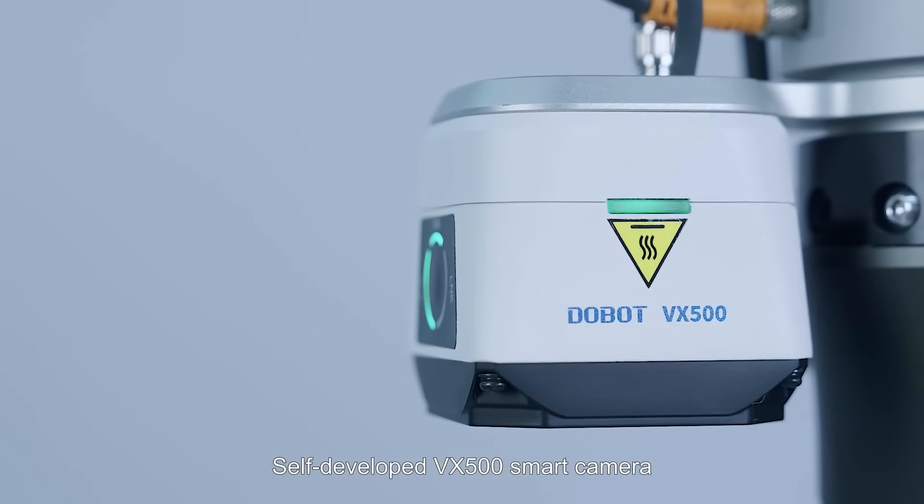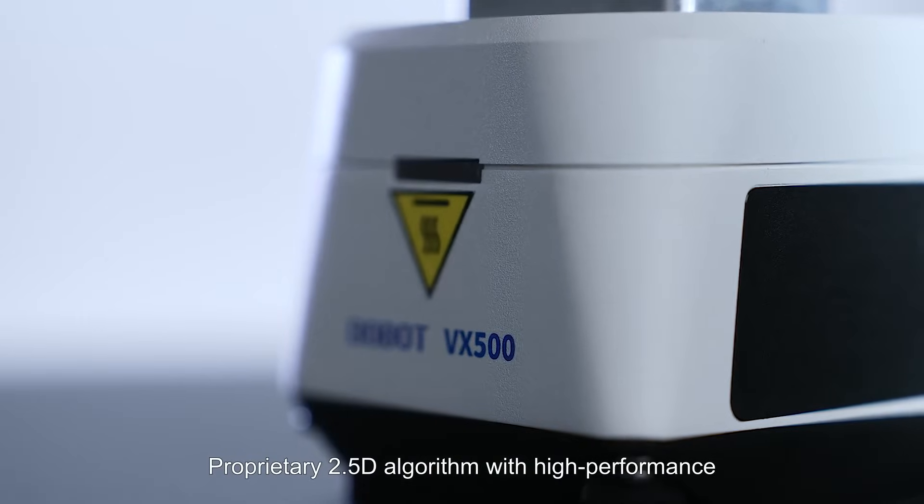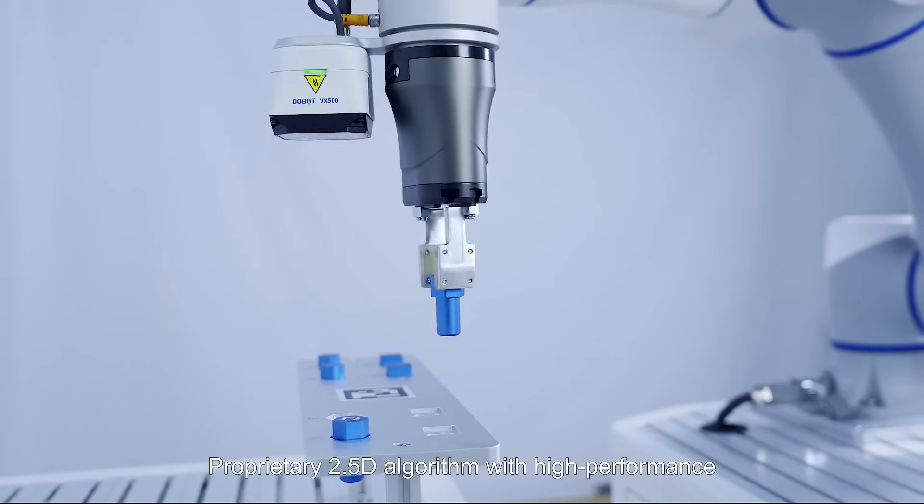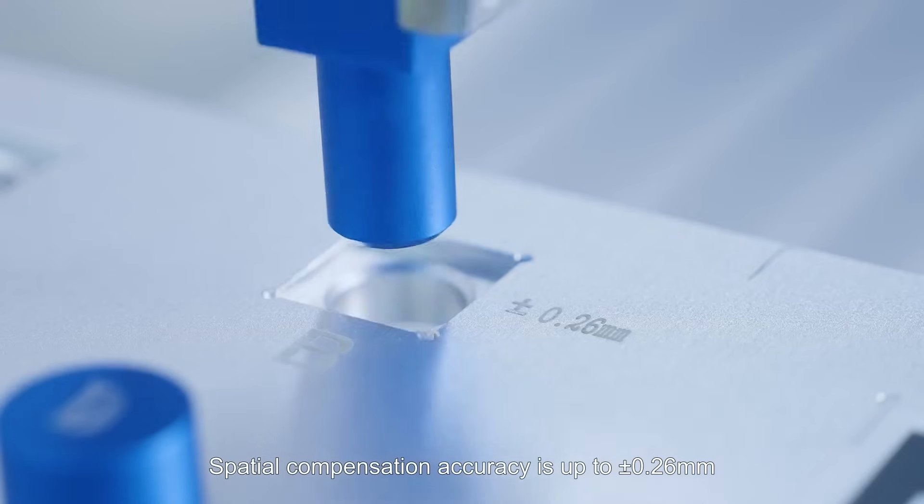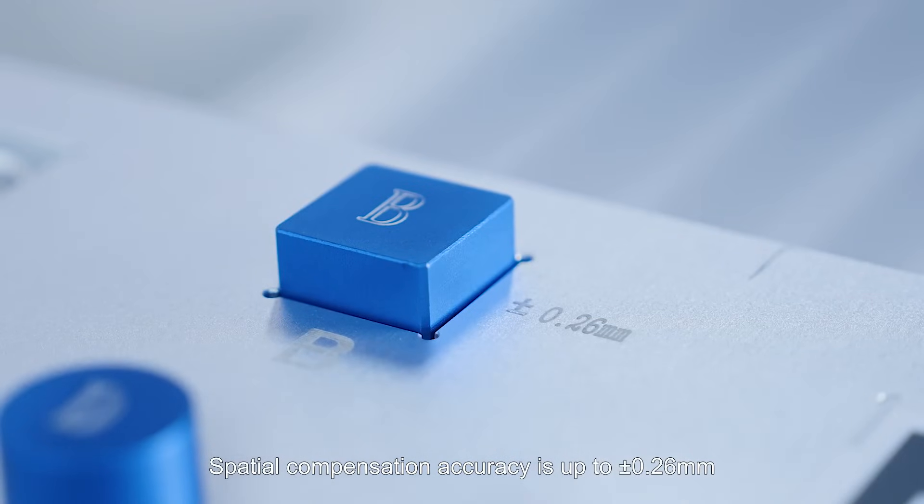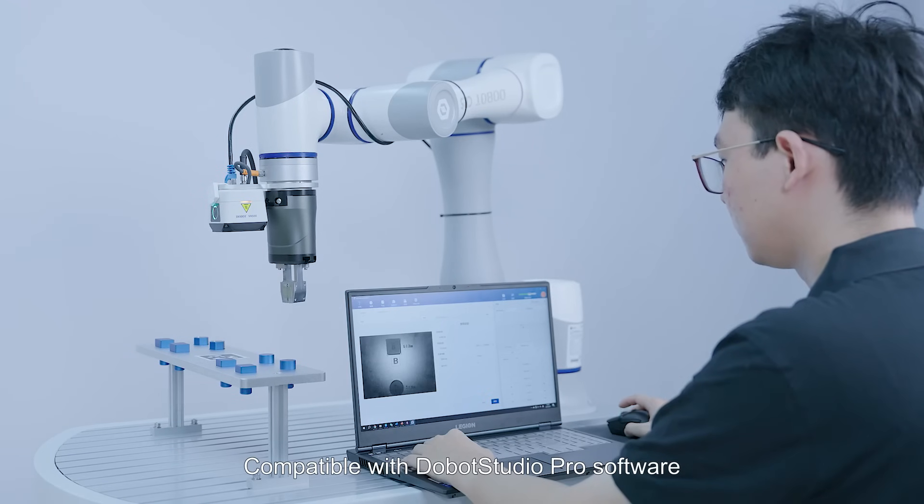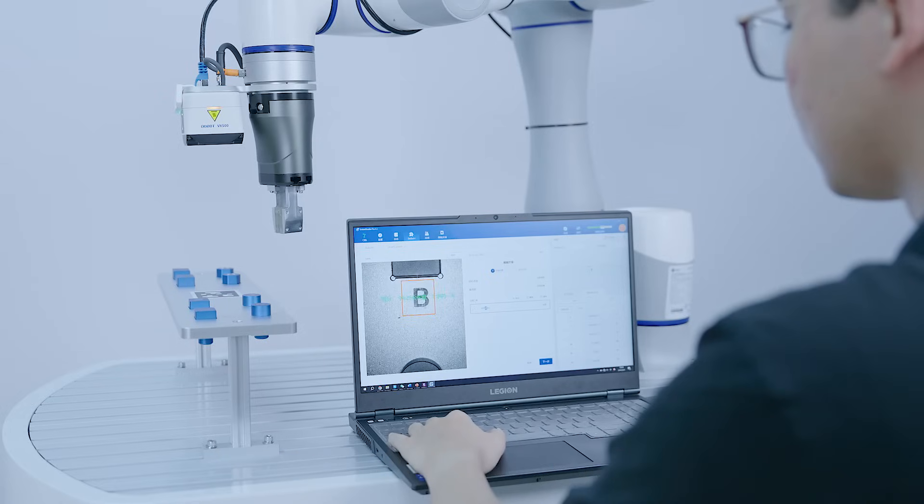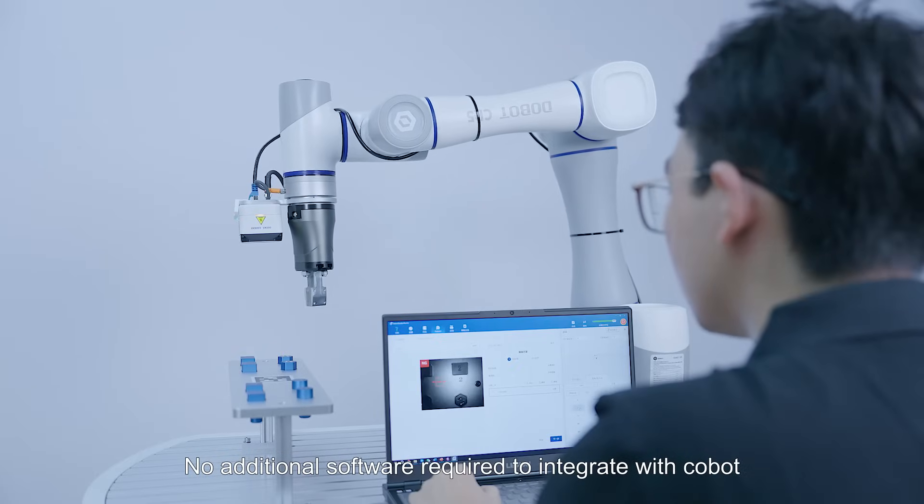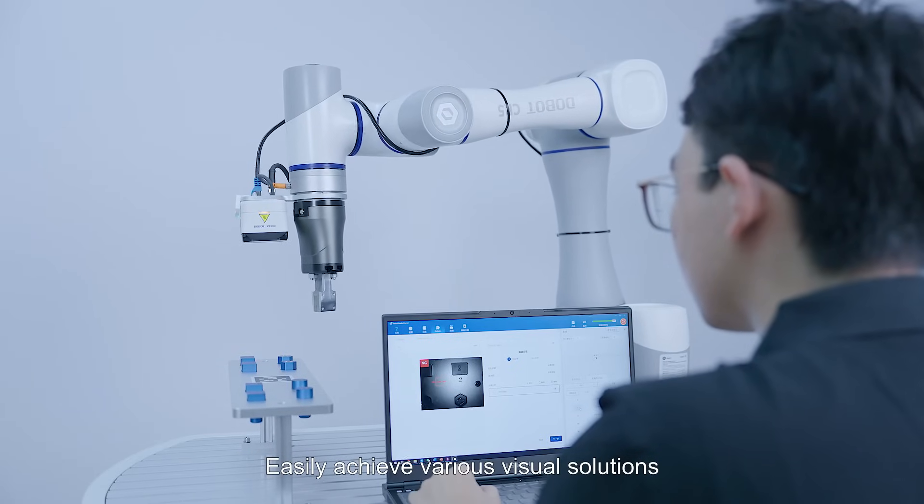Self-developed VX500 smart camera. Proprietary 2.5D algorithm with high performance spatial compensation accuracy is up to plus or minus 0.26mm. Fit for extensive visual applications compatible with Dobot Studio Pro software. No additional software required to integrate with Cobot. Easily achieve various visual solutions.